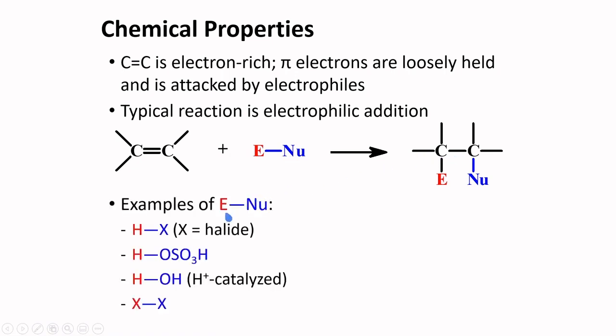Examples of this type of reagent are hydrogen halides, this is sulfuric acid, this is water which requires an acid catalyst, these are halogens. Aside from those, we have several electrophiles other than H+: we can have BH3, BF3, AlCl3, and these cations.